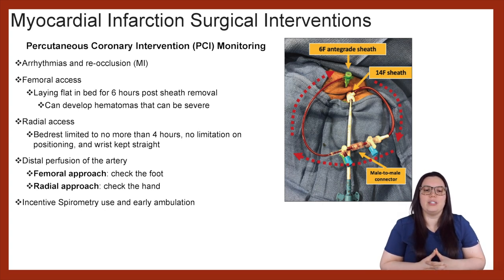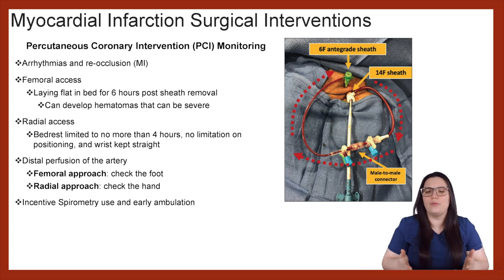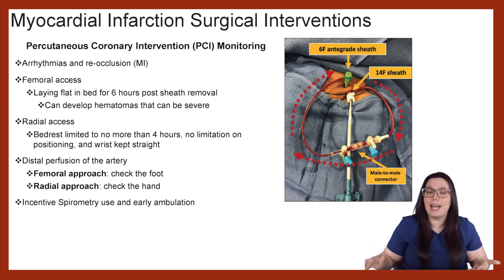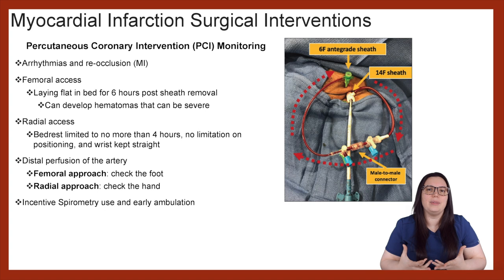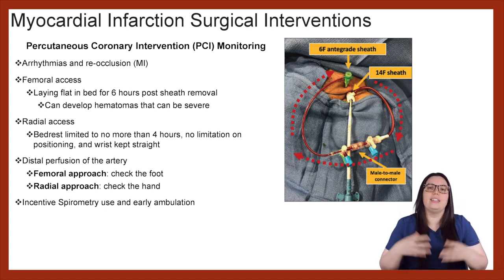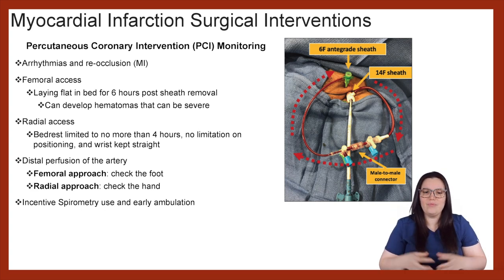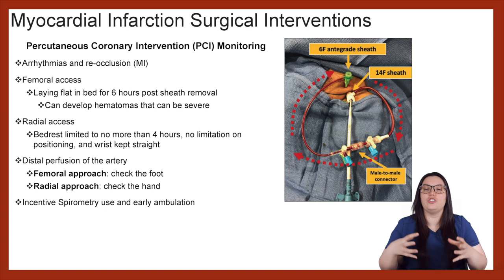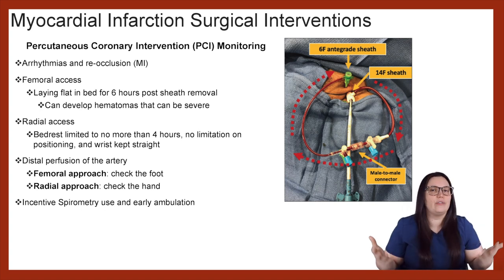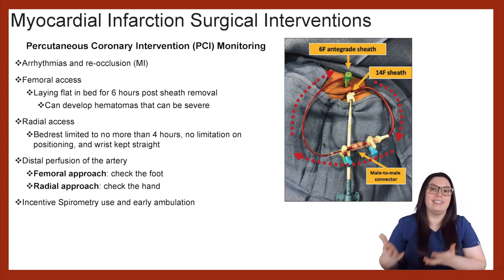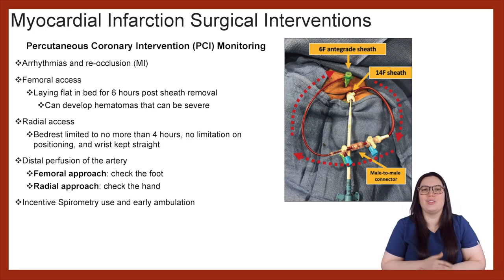When it comes to radial access patients, bed rest is limited to no more than four hours, and there are really no positioning limitations — unlike femoral access patients who need to be laying completely flat. With radial access, the patient can sit up in bed; the only restriction is that they keep their wrist straight post-procedurally. We also need to assess for distal perfusion: check the foot for femoral approach patients and the hand for radial approach patients. And as with any surgical procedure, incentive spirometry use and early ambulation once restrictions allow are highly recommended.